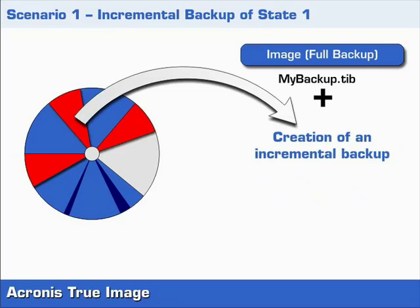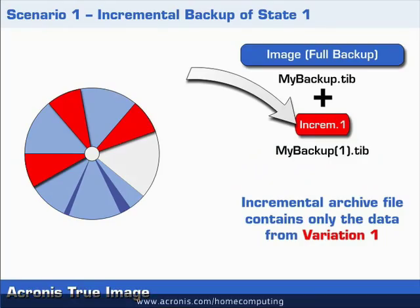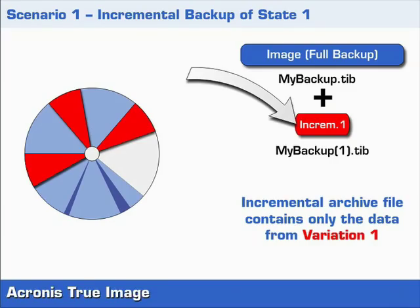In other words, the program compares the data in the full backup archive with the data on the current partition, and creates an incremental archive file that only contains the changes that are not contained in state 0. We call this incremental backup backup 1.